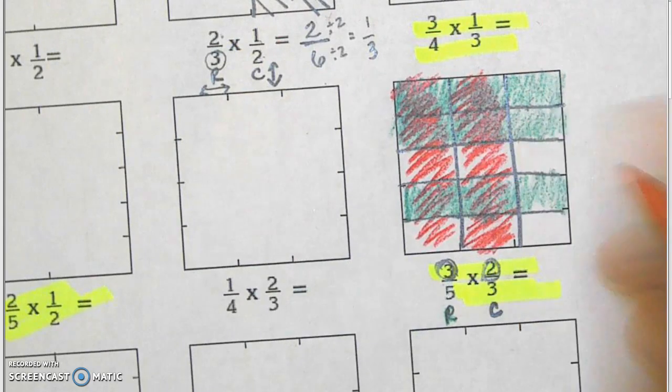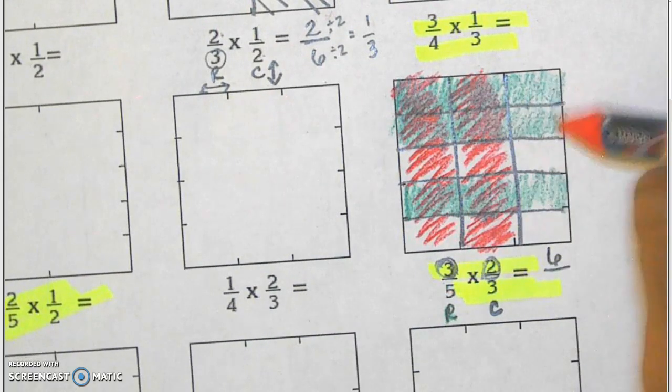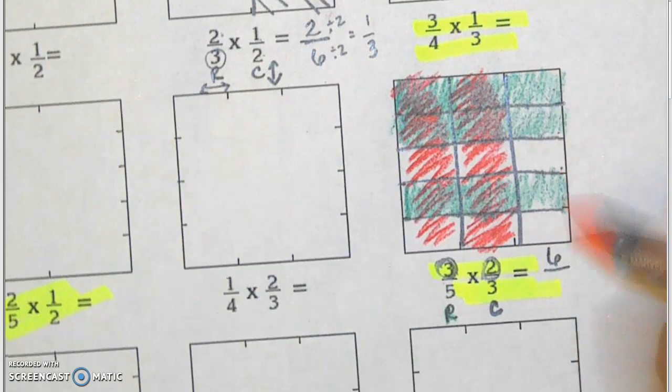I have six boxes that have the overlap of green and red. And then for my denominator, I just want the total boxes. Three, six, nine, twelve, fifteen boxes.